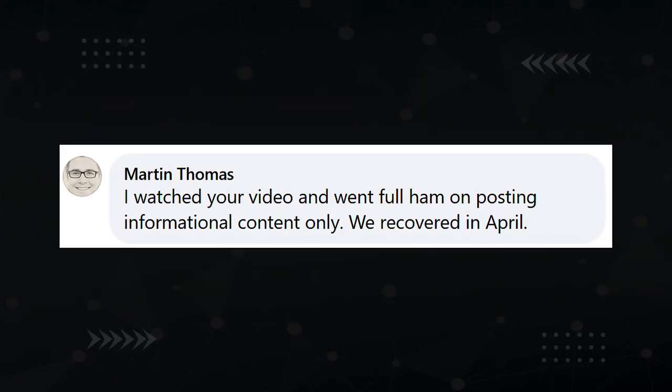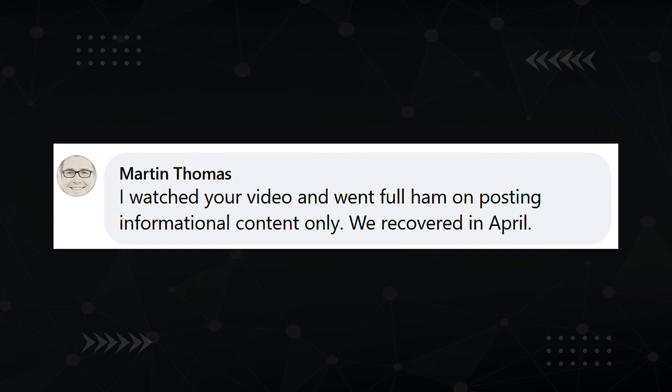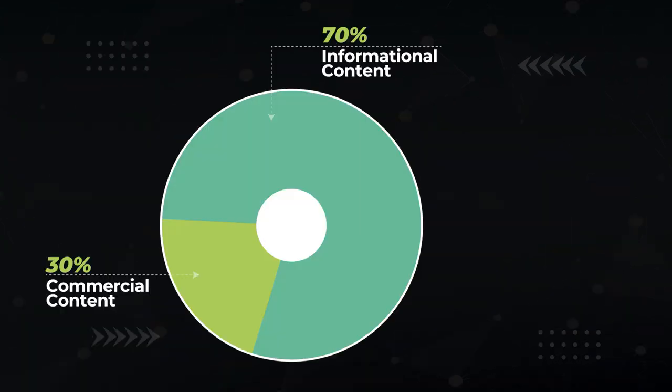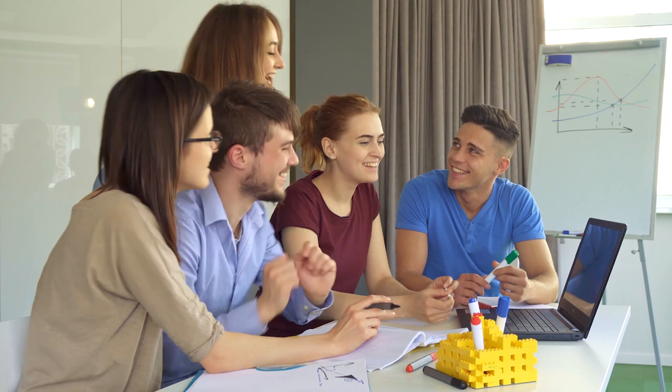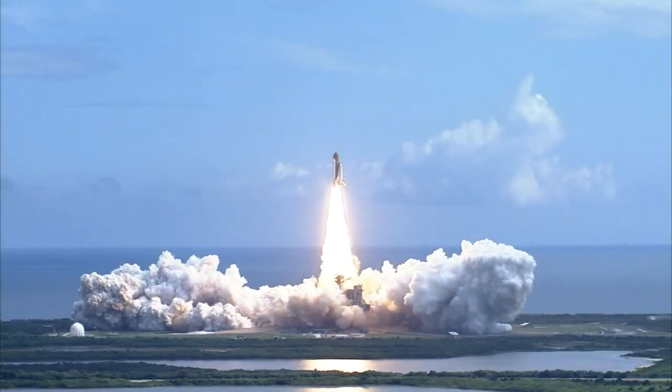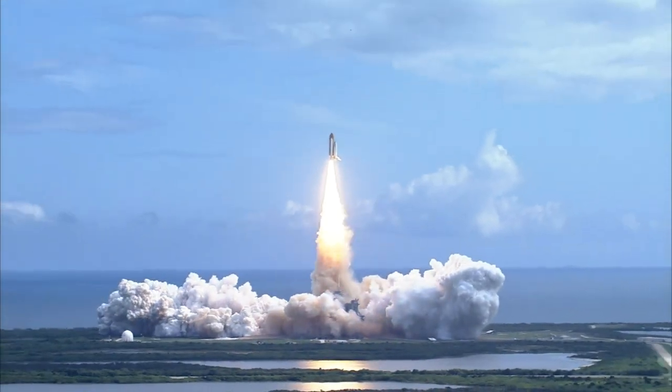It's not just me that recovered — Martin Thomas from the Affiliate Lab applied the same strategy and got similar results. When my site recovered, it had about 70% informational versus 30% commercial content, meaning for every seven pieces of informational content, there are three monetized pieces of affiliate content. But the truth is, I have no idea if this was the right ratio. We were publishing informational content like mad, then all of a sudden during a core update, our site skyrocketed. But it's possible we overshot this golden ratio — so that's what I'm going to answer in this video.